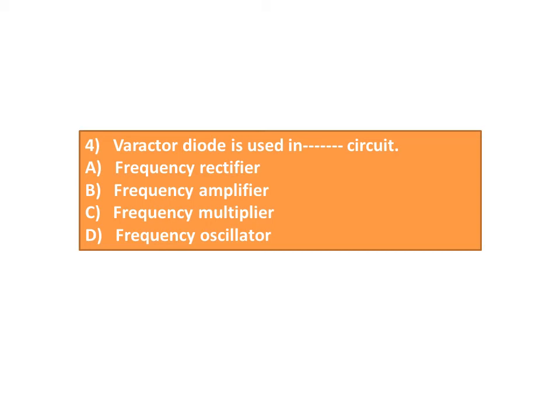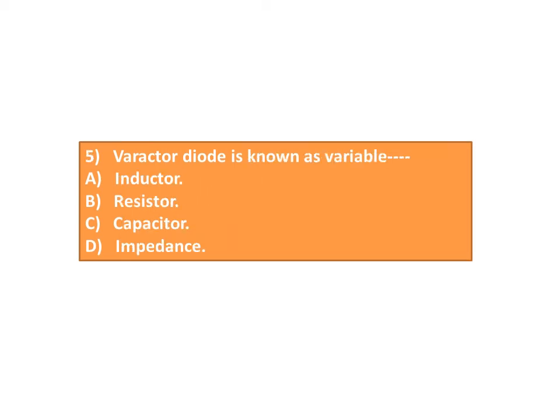Question 4: The Varactor Diode is used in a frequency ___. A. Frequency Rectifier, B. Frequency Amplifier, C. Frequency Multiplier, D. Frequency Oscillator. Question 5: The Varactor Diode is known as a variable ___. A. Inductor, B. Resistor, C. Capacitor, D. Impedance.